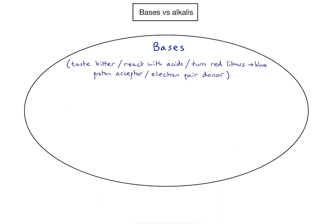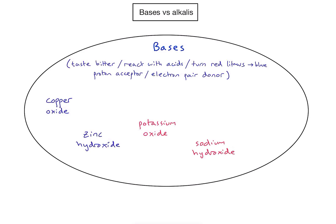So let's take five common examples of bases. Let's take copper oxide, perhaps zinc hydroxide, maybe potassium oxide, sodium hydroxide, and let's look at ammonia as well. These five are all bases because they fit the definitions that we've just mentioned.